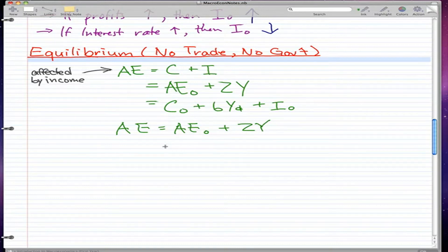If we rearrange this consumption plus investment formula when we expanded it, we can actually get something quite similar. So we can actually get C₀ plus I₀ plus BYD.